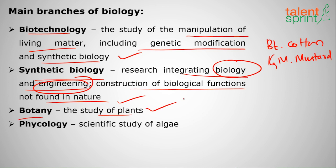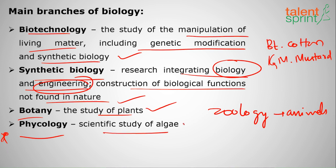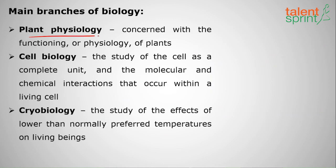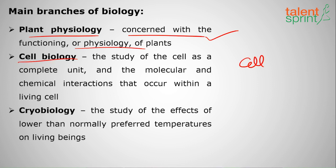Next is botany: the study of plants. Zoology is the study of animals. Next is phytology (also called algology): a very repeated question — it is the study of algae, the green layer we see on ponds. Algae are autotrophic and can prepare their own food. Next is plant physiology: how respiration, transportation, and other processes take place within plants.